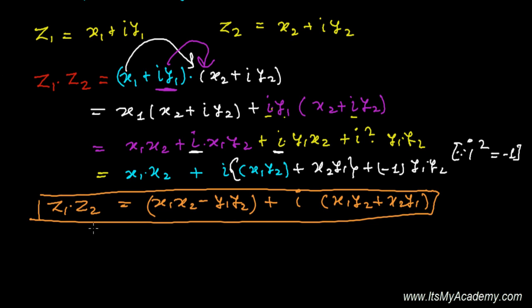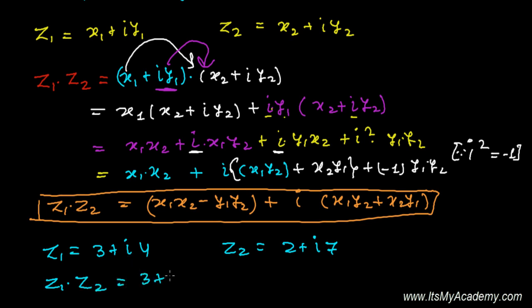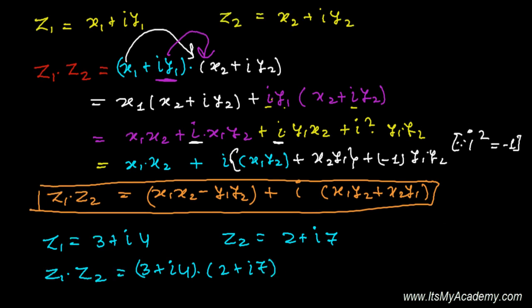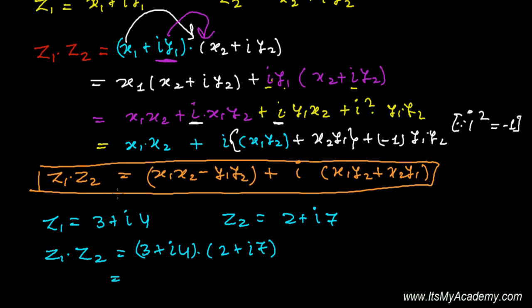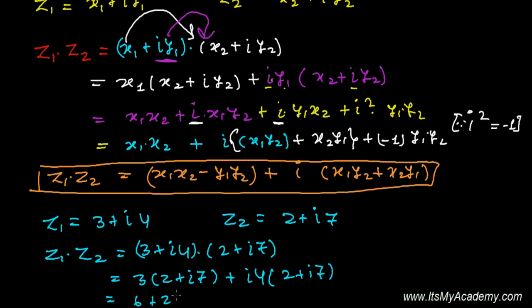Now let's take an example with specific numbers. Let Z1 equals 3 plus 4i and Z2 equals 2 plus 7i. I want to find Z1 times Z2, that is (3 plus 4i) multiplying (2 plus 7i). First using the long method: 3 times (2 plus 7i) gives 6 plus 21i, and then 4i times (2 plus 7i) gives 8i plus i²·28.